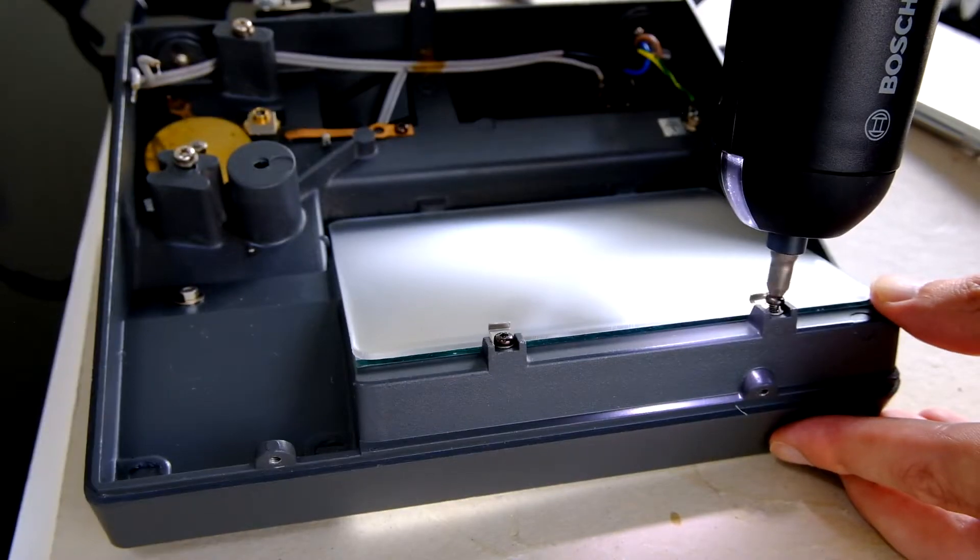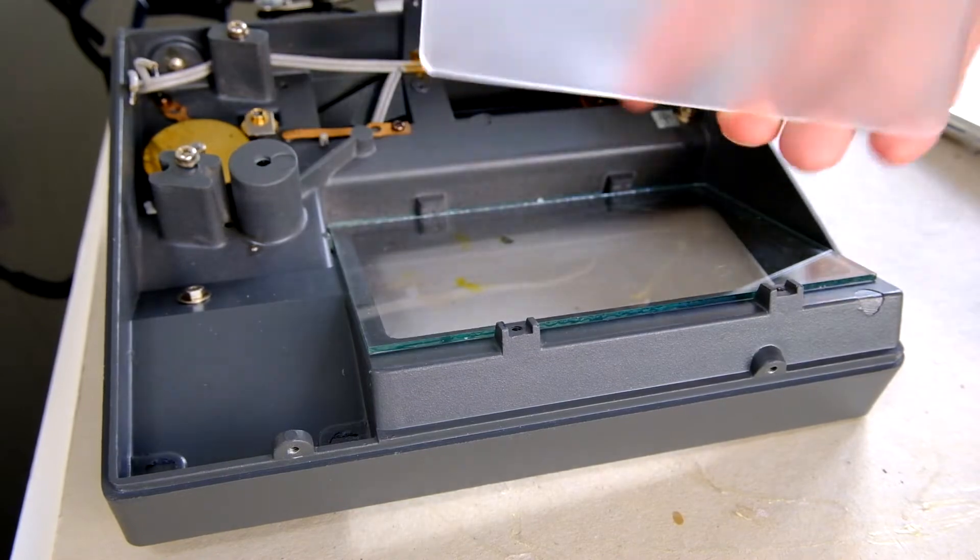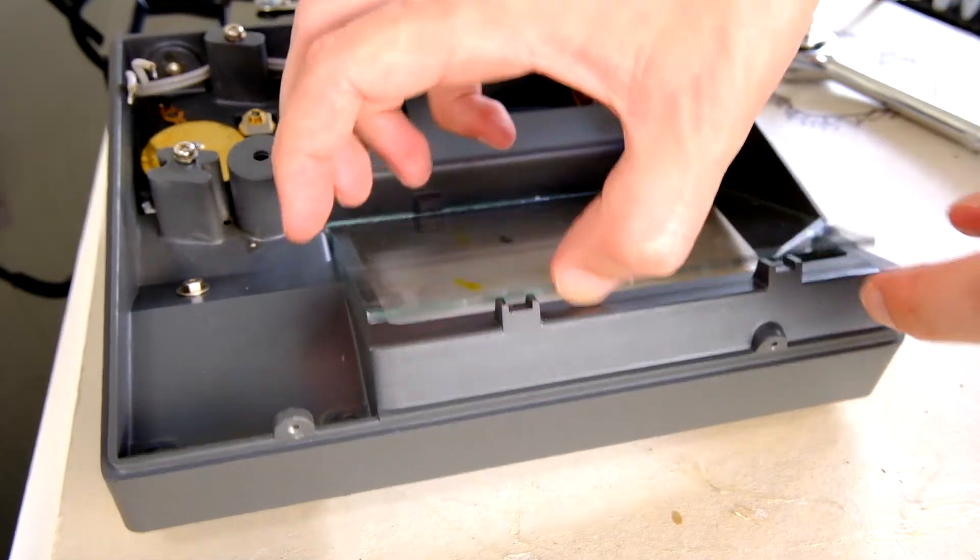Then we'll unscrew the clips that retain the Fresnel lens, and there's also a sheet of glass there. Need those removed.